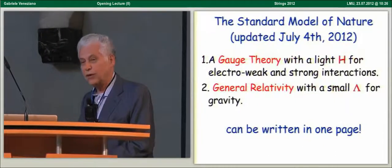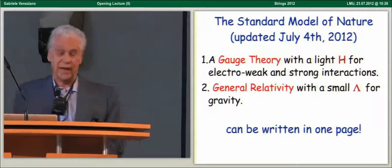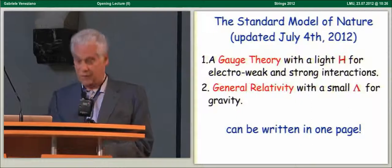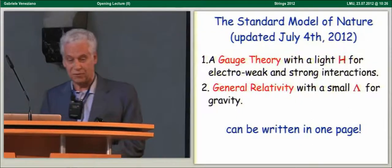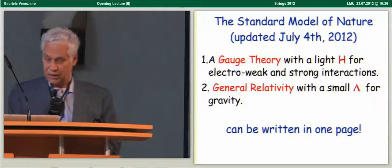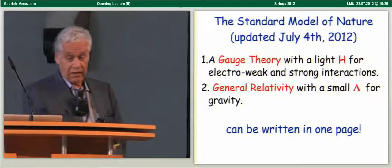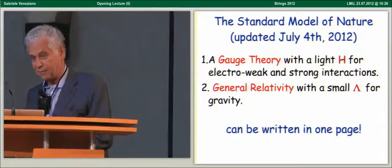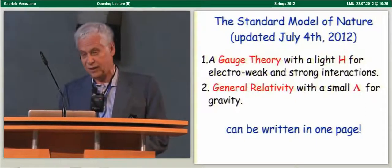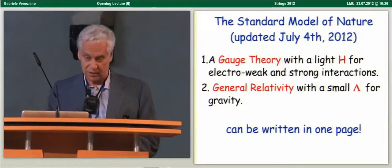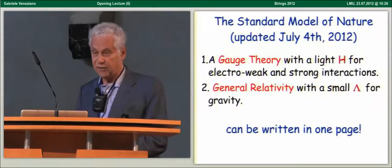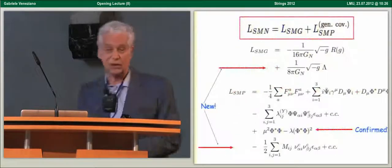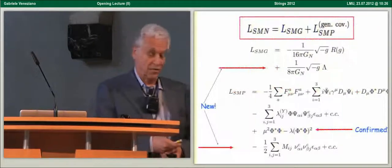Of course, we don't quite know yet whether the light Higgs is really the standard model Higgs. It looks like, but you know, one has to check many things before claiming that has been proven. In the same way, we don't quite know whether lambda, dark energy, is really a cosmological constant or something slightly more complicated. And this very successful model can be written down in one page, which is a remarkable achievement of our field.